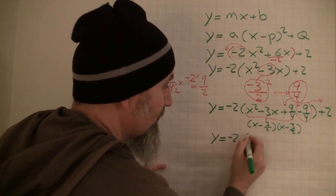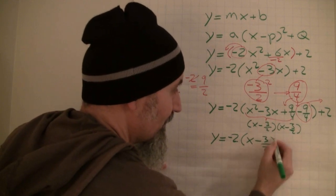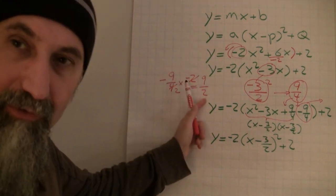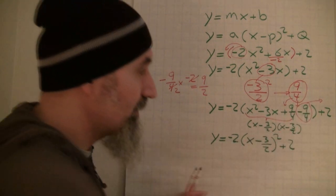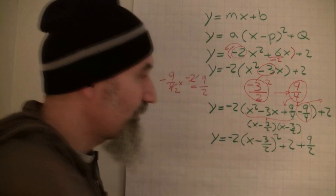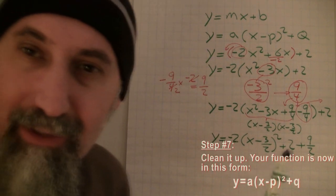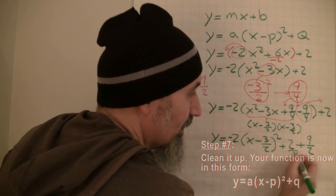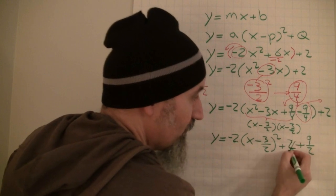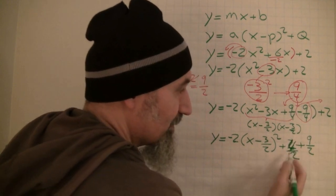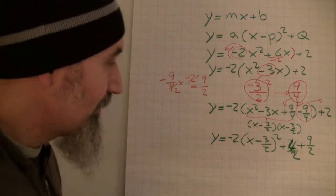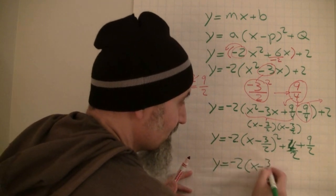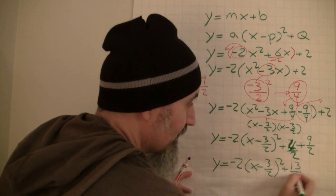So right now our equation looks like this: y is equal to negative 2 times (x minus 3 over 2) squared, plus 2, plus 9 over 2. All we have to do now is add these constants together. The common denominator is 2, so 2 becomes 4 over 2, and 4 over 2 plus 9 over 2 is 13 over 2. Our equation is now y is equal to negative 2 times (x minus 3 over 2) squared plus 13 over 2.